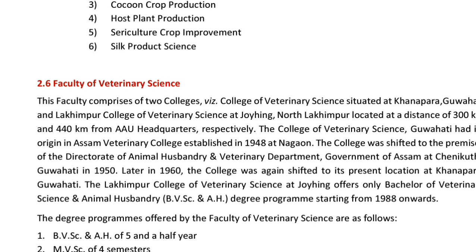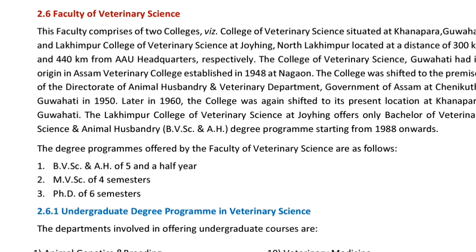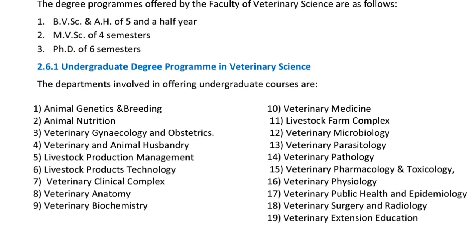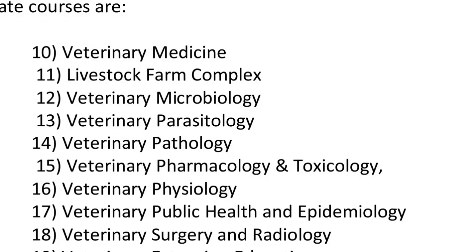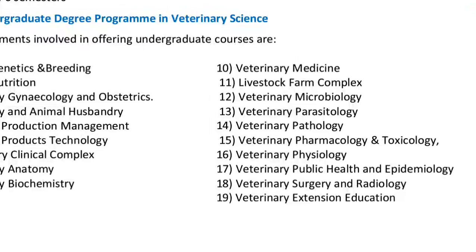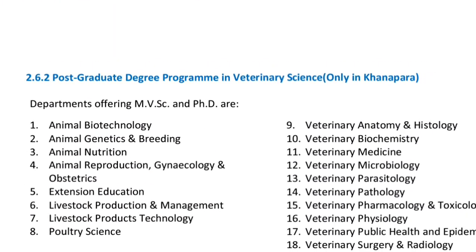The Faculty of Veterinary Science offers a BVSc degree of 5.5 years, an MVSc of 2 semesters, and a PhD of 6 semesters. PhD departments include: Animal Genetics and Breeding, Animal Nutrition, Veterinary Gynecology and Obstetrics, Veterinary and Animal Husbandry, Livestock Production Management, Livestock Products Technology, Veterinary Clinical Complex, Veterinary Anatomy, Veterinary Biochemistry, Veterinary Medicine, Livestock Farm Complex, Veterinary Microbiology, Veterinary Parasitology, Veterinary Pathology, Veterinary Pharmacology and Toxicology, Veterinary Physiology, Veterinary Public Health and Epidemiology, Veterinary Surgery and Radiology, and Veterinary Extension Education.